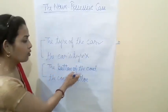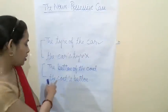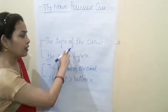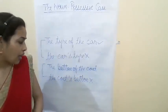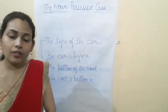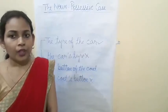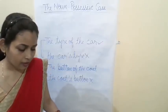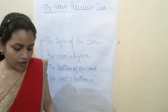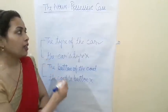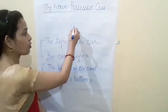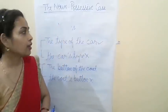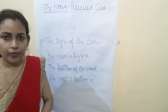Another example: 'the button of the coat' — we do not write 'the coat's button'. With living things we follow apostrophe sign with S; with non-living things we use the preposition 'of' to make the possessive case. I hope this chapter is clear.